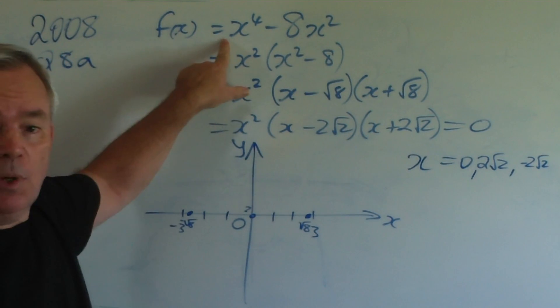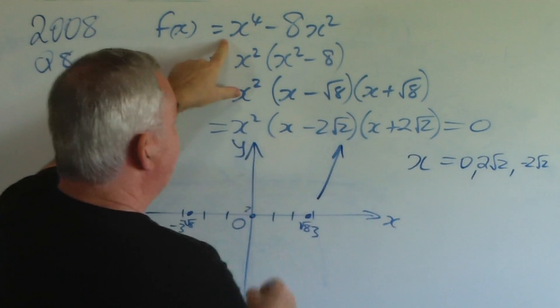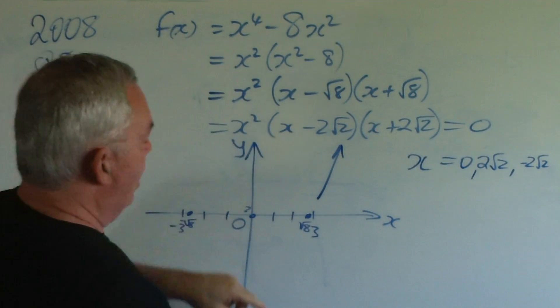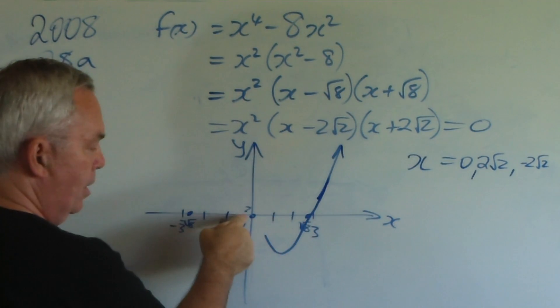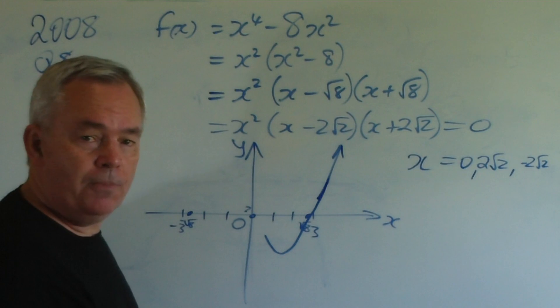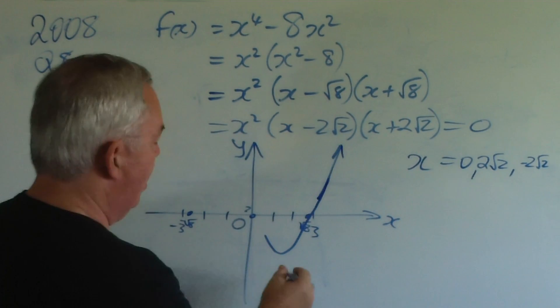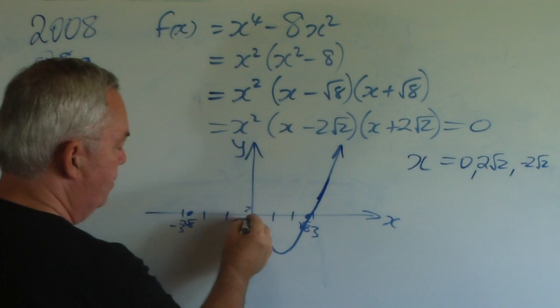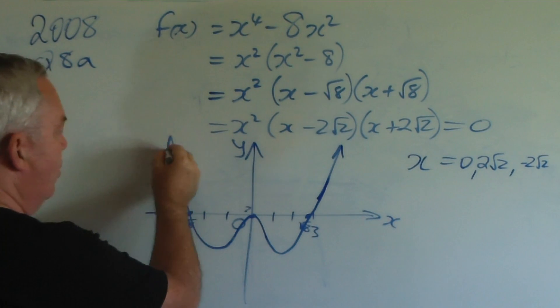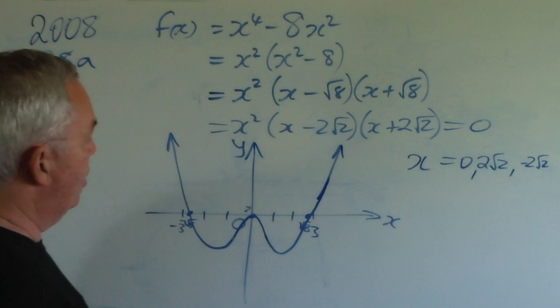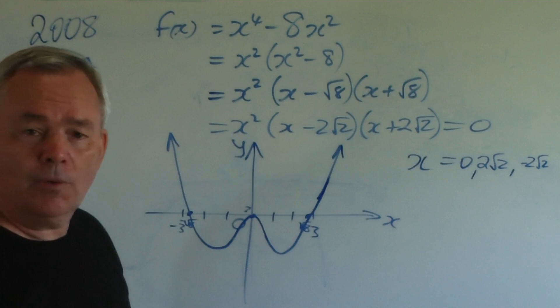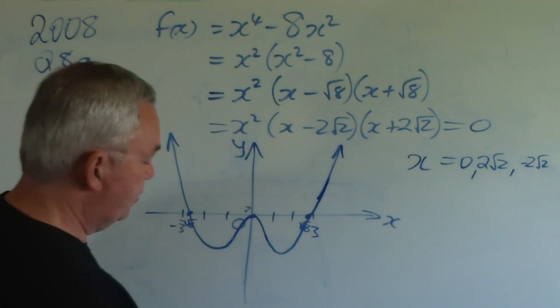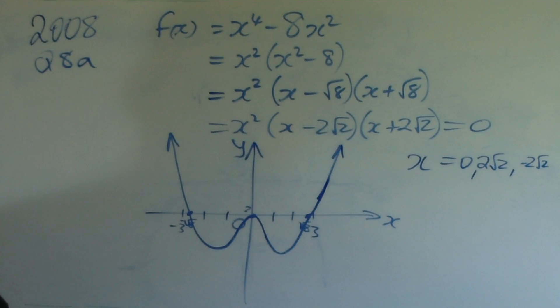The leading coefficient is positive, so we know the curve is going upwards here. And, these two are normal roots, so the curve will pass directly through them. As it comes up to the root at zero, because it's a double root, it's going to behave like an upside-down parabola. And then, it's going to pass up normally through that root. You can see why quartic equations, fourth-powered equations, are often looking like a W. That's the graph for the 2008 HSC exam.